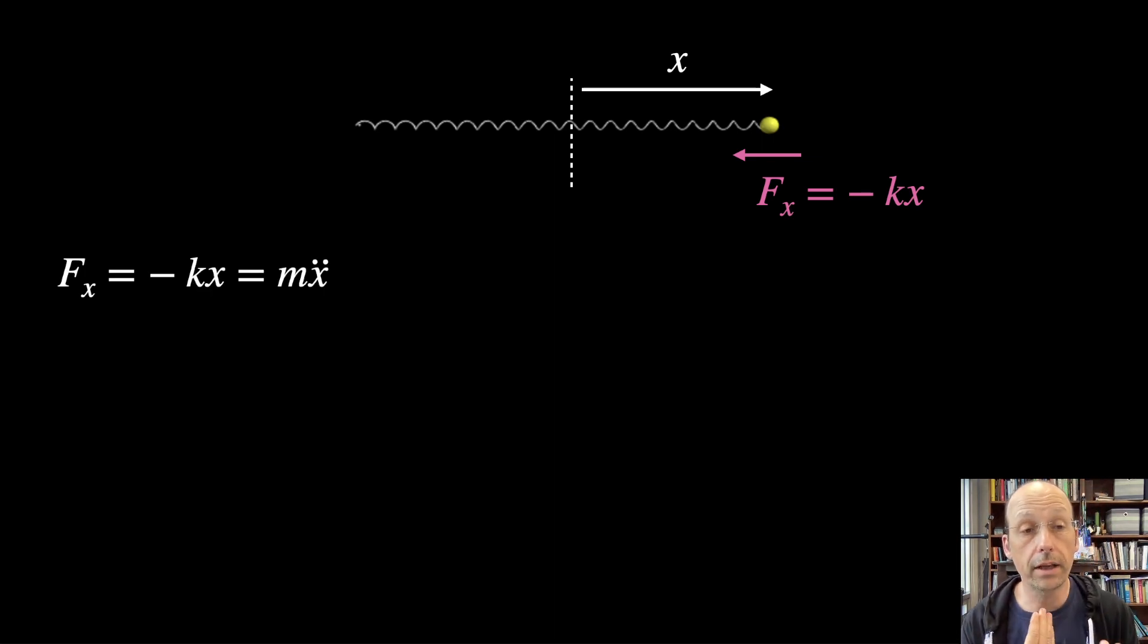negative kx, where k is the spring constant. Using Newton's second law, we can write this, and I have a video on this. So if you want to look at this in more detail, down below there's a video. So the net force is negative kx, and that's mass times acceleration. We write the second derivative of x with respect to time as x double dot, because it looks cool, and it takes a lot less space.